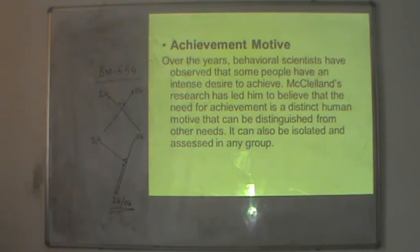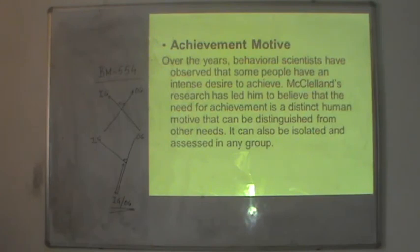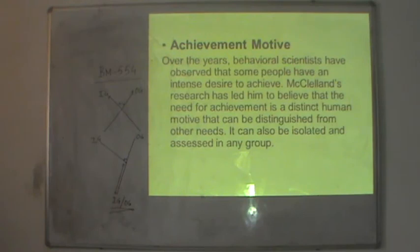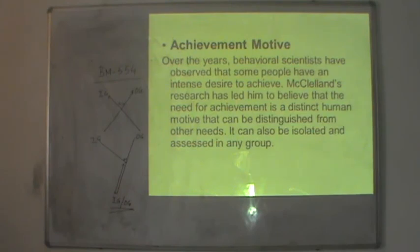The third and final need in McClelland's theory is need for achievement, also referred to as nAch. Behavioural scientists have observed that some people have an intense desire to achieve. McClelland's research led him to believe that the need for achievement is a distinct human motive that can be distinguished from other needs and can also be isolated and assessed in any group. McClelland says this is the most important set of needs, which distinguishes itself from other needs.